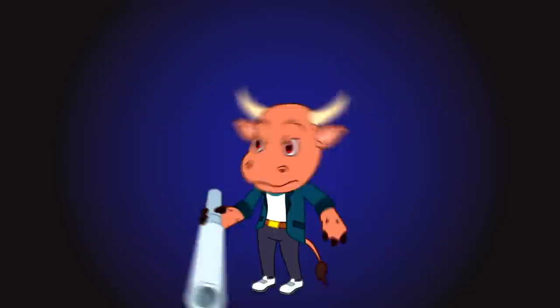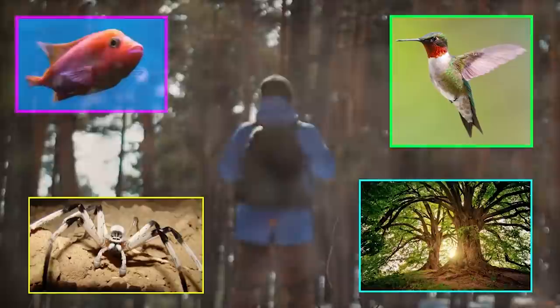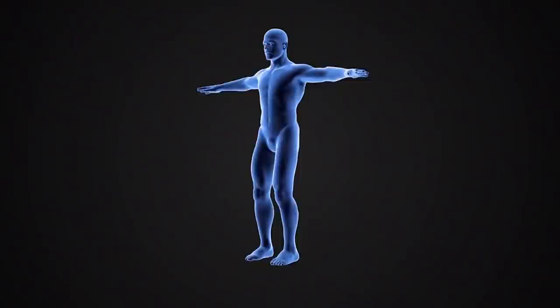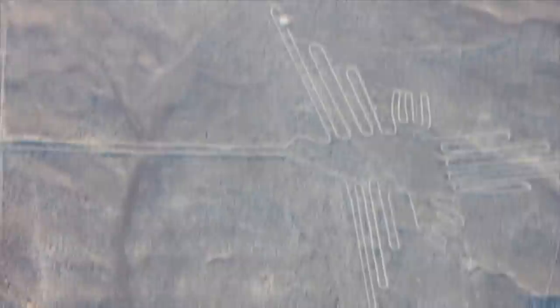Number 4, The Nazca Lines. Ordinarily, a hummingbird, spider, tree, fish, jaguar, monkey, llama, lizard, dog and a human would have very little in common. Other than obviously they're all living things, but in Peru, they have one major thing in common. They are all part of the famous Nazca Lines. In southern Peru's Nazca Desert, a series of enormous geoglyphs line the soil to create designs of animals and plants, all composed of lines and indentations.